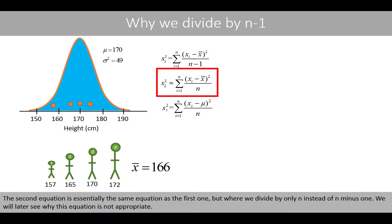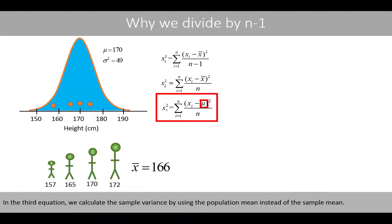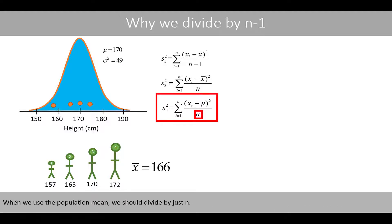The second equation is essentially the same as the first one, but where we divide by only n instead of n minus 1. We will later see why this equation is not appropriate. In the third equation, we calculate the sample variance by using the population mean instead of the sample mean. When we use the population mean, we should divide by just n.